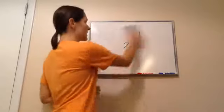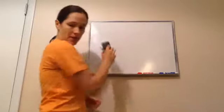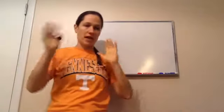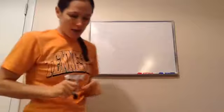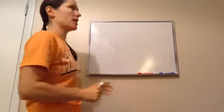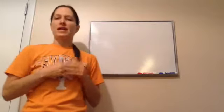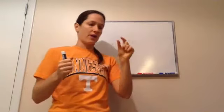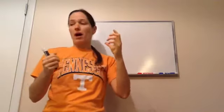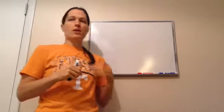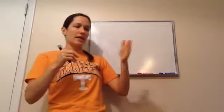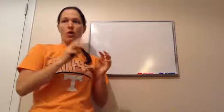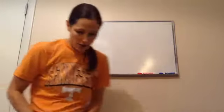Algebra 1, Lesson 20. This one is on volume — this will mostly be a review, but it's good to cover a few more things. Let's talk about what volume is. The best way I can explain it is using a sugar cube, or any kind of box. You're basically taking length, width, and height — all three dimensions.